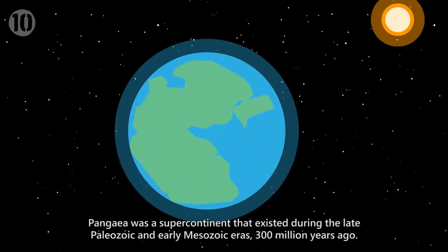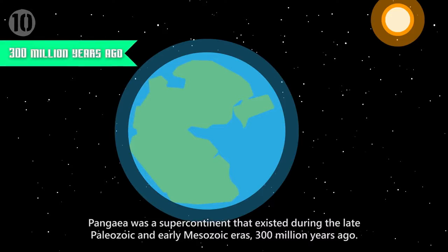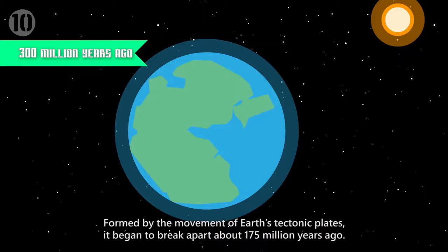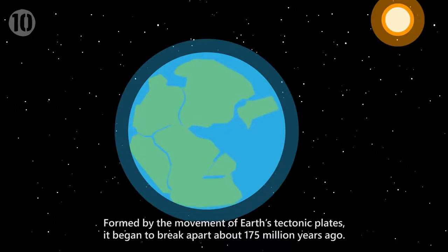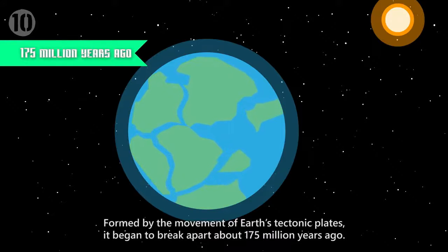Number 7: Pangaea. Pangaea was a supercontinent that existed during the late Paleozoic and early Mesozoic eras, 300 million years ago. Formed by the movement of Earth's tectonic plates, it began to break apart about 175 million years ago.